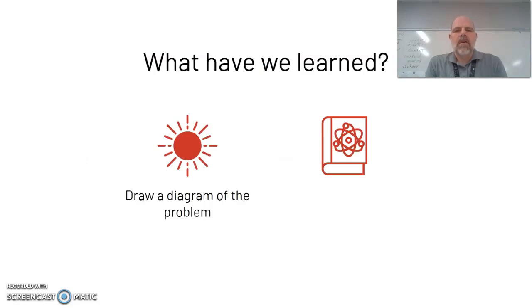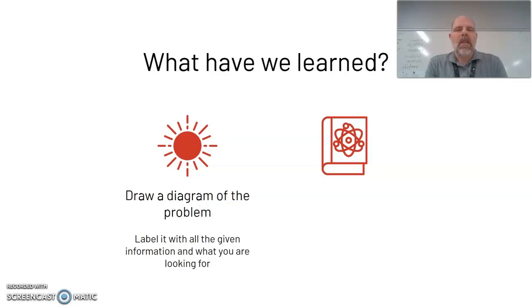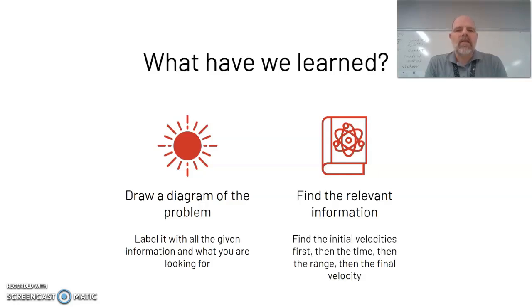So what have we learned in this lesson? First, draw a diagram of the problem and label it with all given information and what you're looking for — it helps a lot when solving problems. Second, find the relevant information: find the initial velocities first, then the time, then the range, and then the final velocity. That's how you solve projectile motion problems.